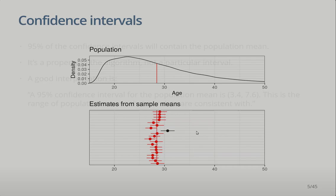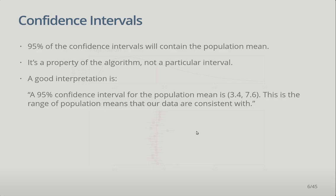The interpretation should be something like this: a 95% confidence interval for the population mean is from A to B — this is the range of population means that are consistent with the particular sample data that I have. We're not saying the population mean definitely lies in this range; we're saying this is the range of population means that our data are consistent with.